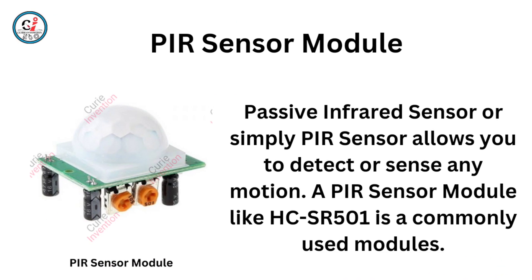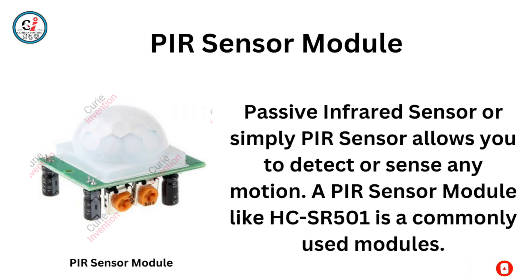PIR Sensor Module. A Passive Infrared Sensor, or simply PIR Sensor, allows you to detect or sense any motion. A PIR Sensor Module like the HC-SR501 is a commonly used module for motion detection.